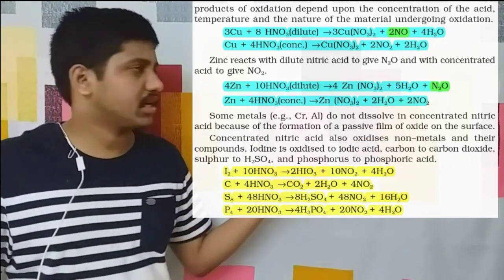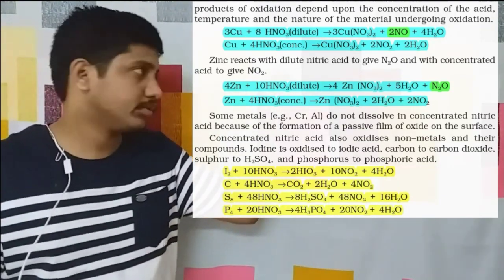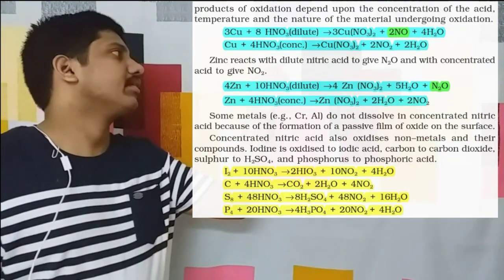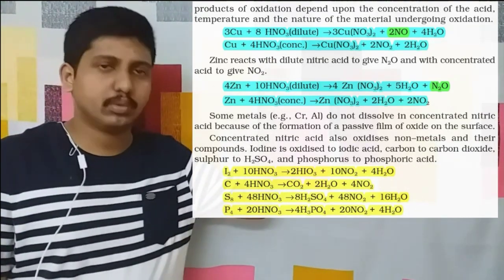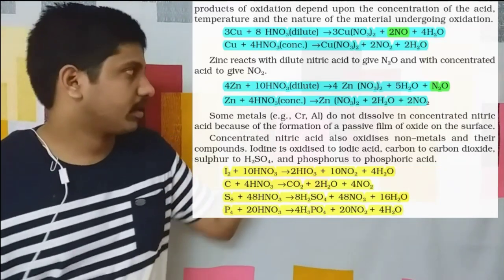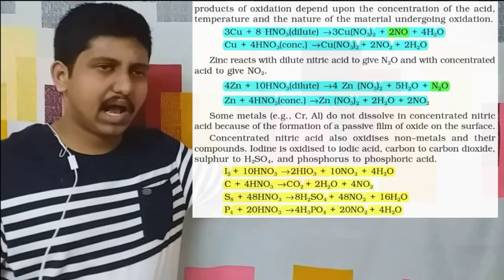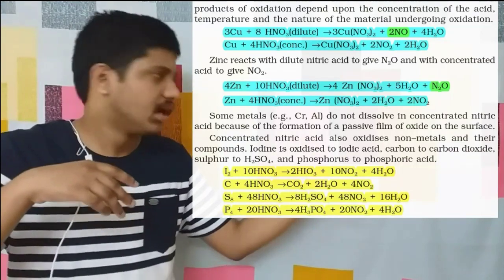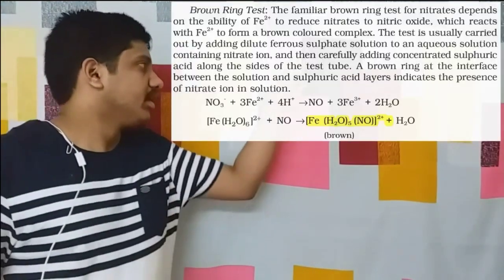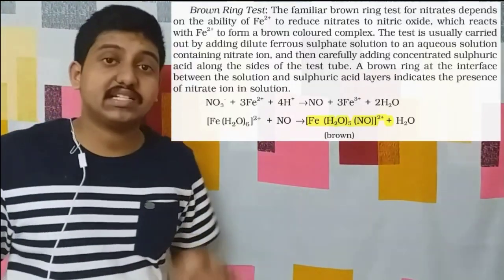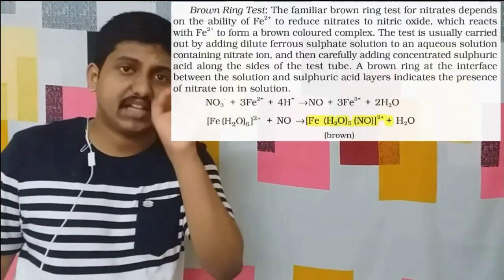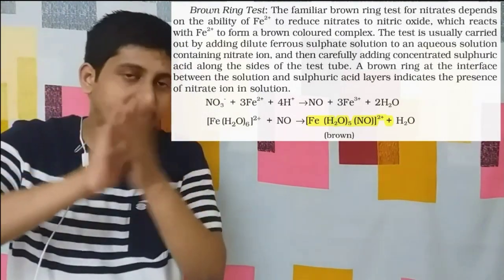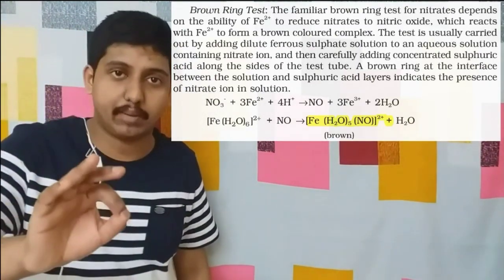Since nitric acid is an oxidizing agent, it oxidizes I2 to HIO3 — that is iodic acid — and S8 to sulfuric acid, and so on. It oxidizes non-metals to their corresponding oxides. Next point: the nitrate ring test.